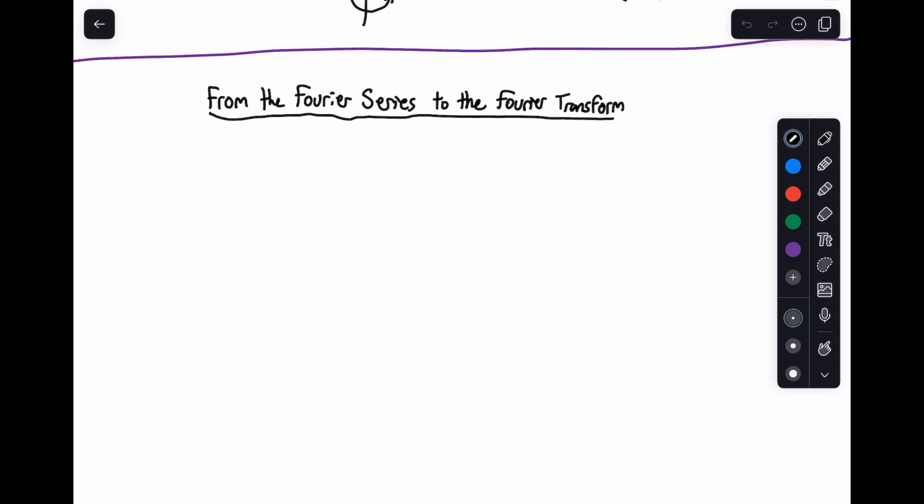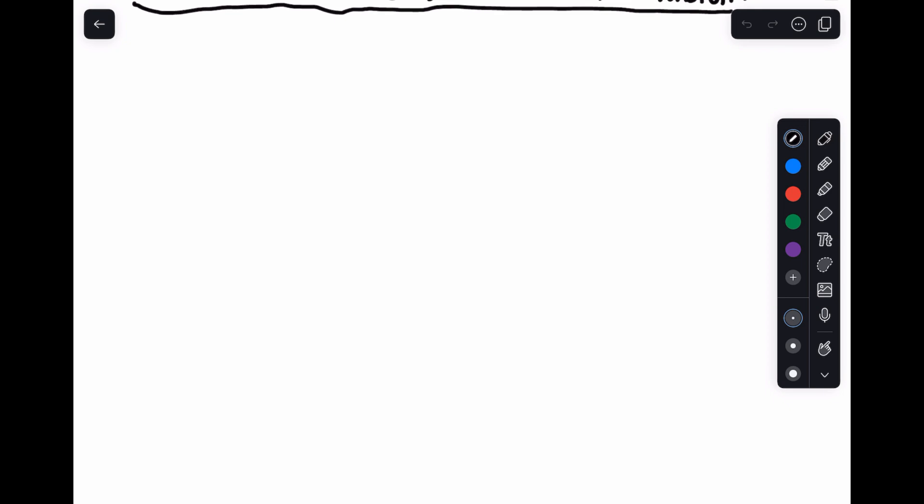Hey everyone, welcome back to Signal Processing with Paul. In this video I'm going to talk about how we can go from the Fourier series, which is finding the spectrum of a periodic signal, to the Fourier transform where we don't have any periodicity, or basically finding the spectrum of a signal that doesn't necessarily repeat in time.